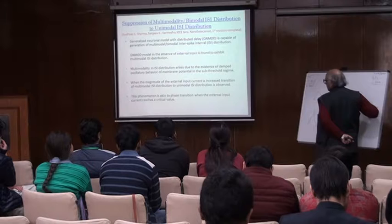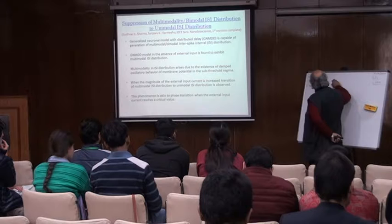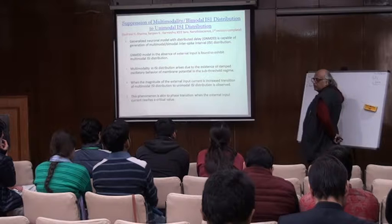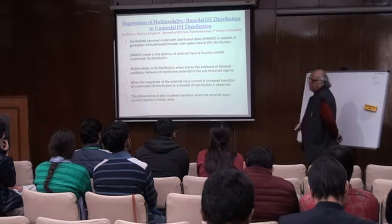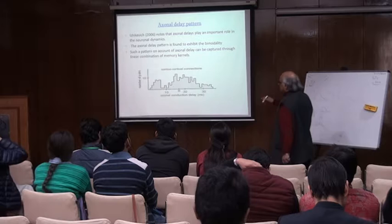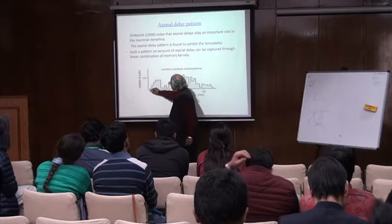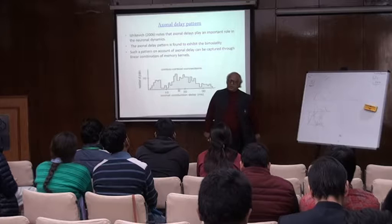This neuron will receive some signal from here; the delay is as much as 0.1 millisecond to 46 milliseconds — experimental data. And if you look at this experimental data, you find this is a type of delay distribution. If you look at it, it goes here — so this is a bimodal delay.